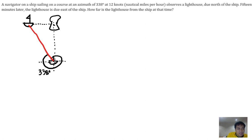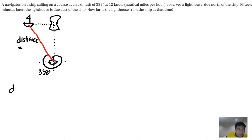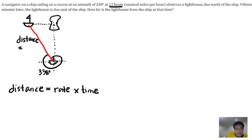This distance is what the ship traveled over 15 minutes. We need to find this distance. Based on our discussions, distance is equal to rate times time. We know the rate of the ship is 12 nautical miles per hour and the time of travel is 15 minutes, so we need to convert 15 minutes to hours.